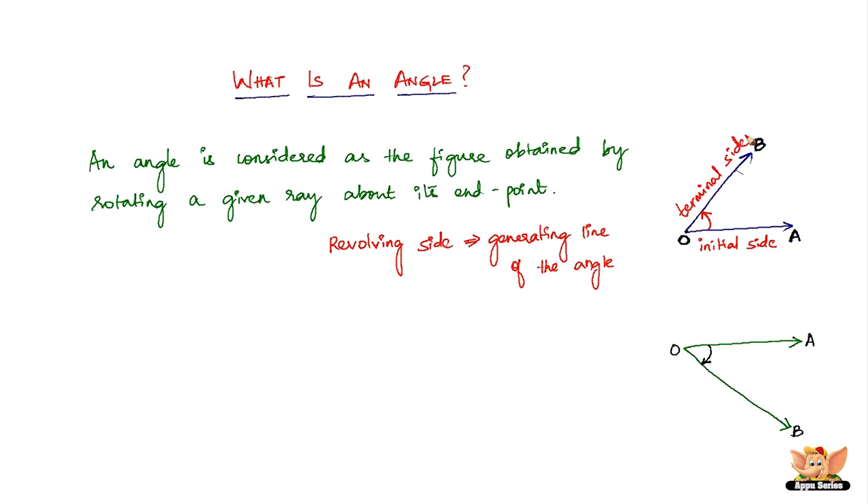The terminal side of the angle, and the endpoint about which the angle rotates—this point O—is called the vertex of the angle.